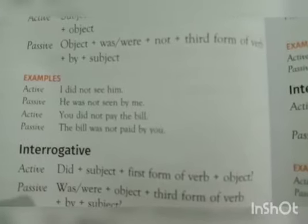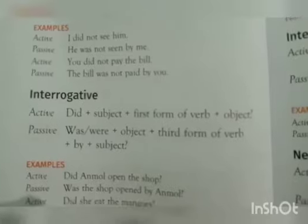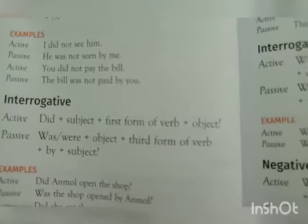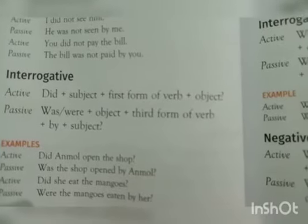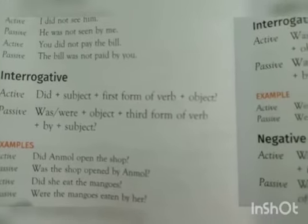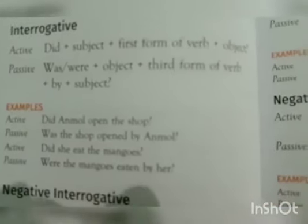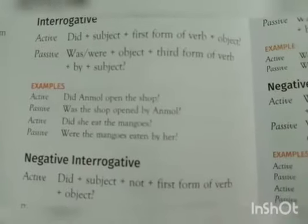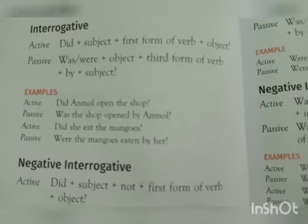Moving on to the past indefinite interrogative: 'did' comes at the starting, followed by subject, first form of verb, then the object, ending with a question mark. In the passive form, was and were come at the starting with object, then the third form of verb followed by 'by' and the subject. For example: 'Did Unmole open the shop?' becomes 'Was the shop opened by Unmole?' 'Did she eat the mangoes?' becomes 'Were the mangoes eaten by her?'